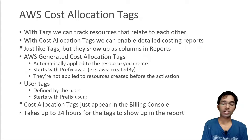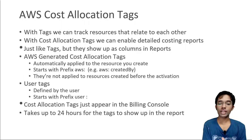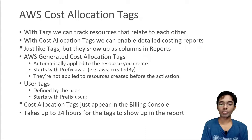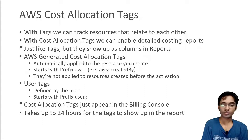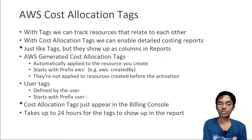There are two types of cost allocation tags. The first is AWS-generated cost allocation tags, which are automatically applied to resources you create. They start with the prefix 'aws' — for example, 'aws:createdBy'. They are not applied to resources created before the activation of these tags.